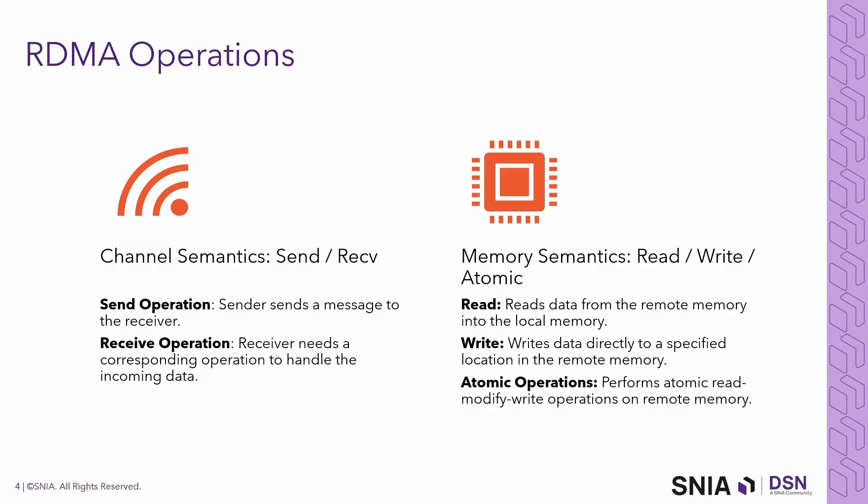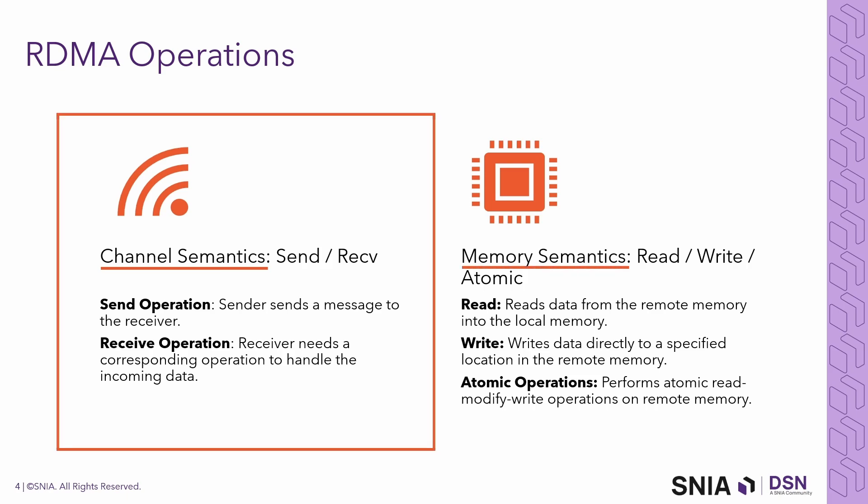So how does this work? We split the RDMA operations into two categories: channel semantics and memory semantics. Channel semantics are similar to the traditional send-receive model, where the sender sends a message to the receiver, the receiver processes the packet, and passes it to the application. In RDMA, the receiver needs to be prepared for an incoming send operation — a buffer is pre-posted.